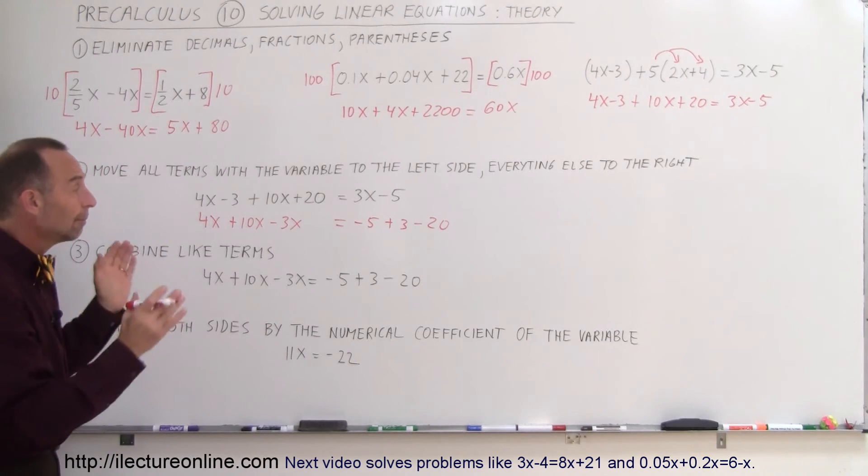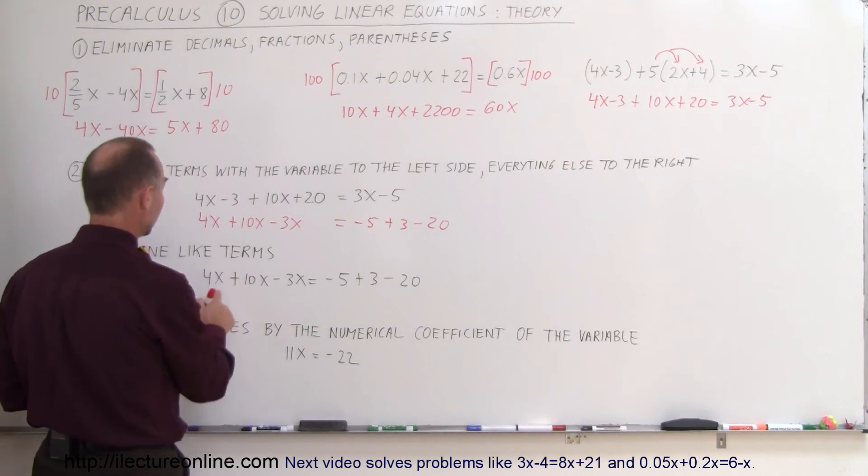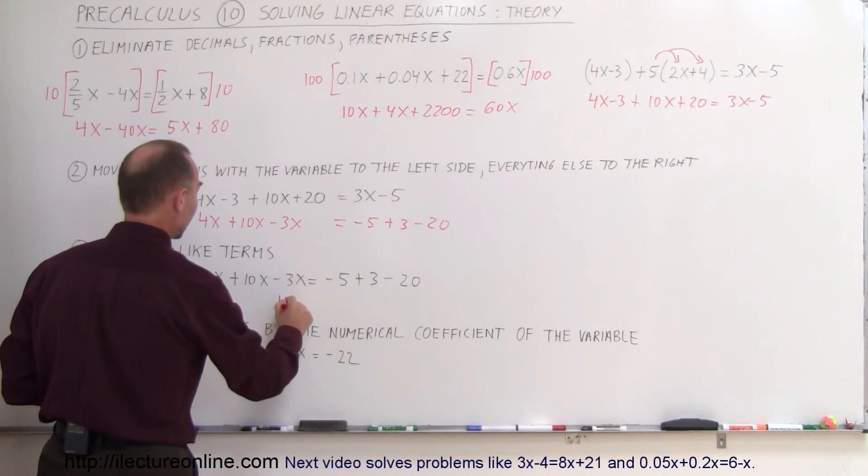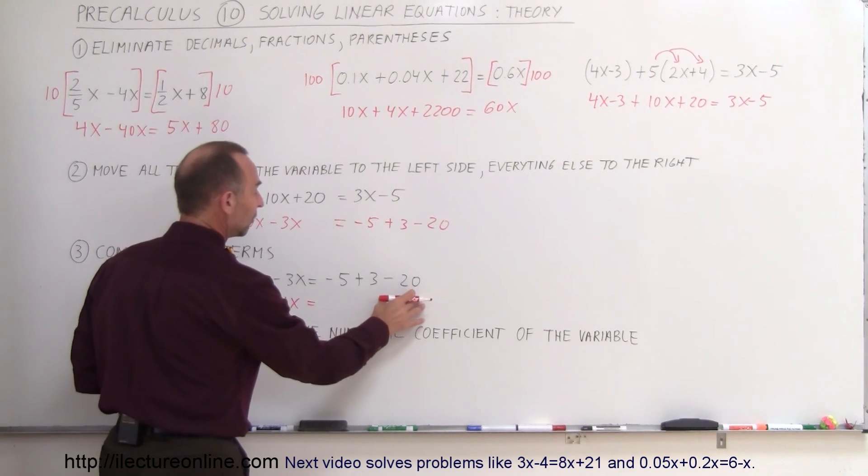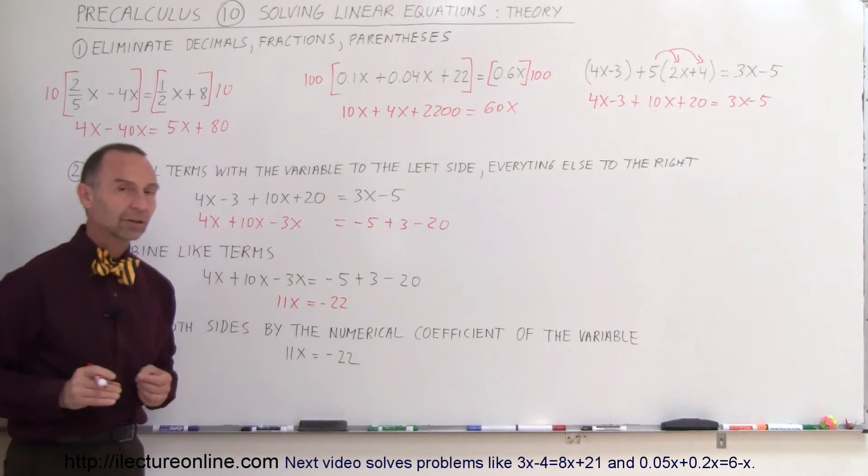The next thing you do is you combine all the terms on both sides of the equation. So on the left side, you combine the three terms. That's 14 minus 3 or 11x equals, and on the right side, that's minus 5 plus 3 minus 20 is minus 22. So combine all like terms.